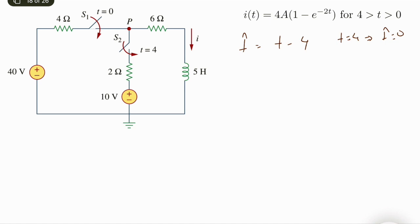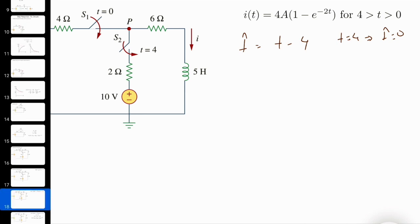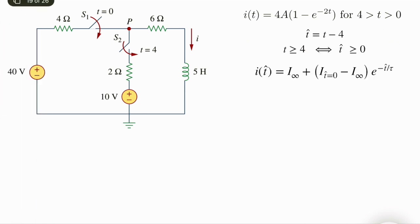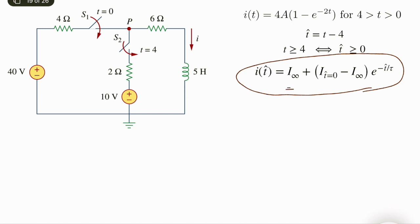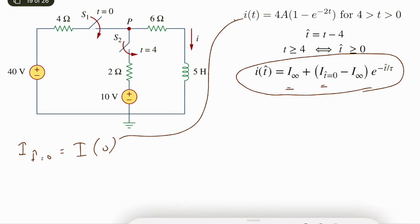We can do everything with respect to t-hat using the same formulas and conditions. We use the same formula as a function of t-hat. What we need to compute is a new steady-state current, new initial current, and new tau. Starting with the initial current: i at t-hat equals 0 means we compute i(4) from the first formula.